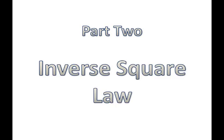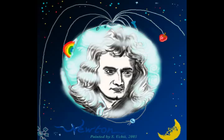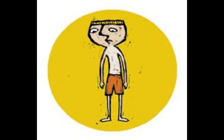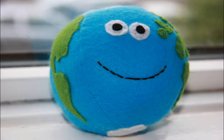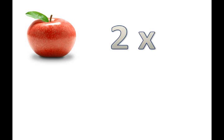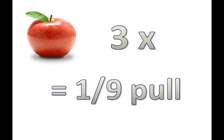Next, we have the inverse square law. There's a little bit of contention because some guy named Hooke said that he thought it up, but Newton said he thought it up first but just didn't show it to anybody — so you can make up your own mind. The inverse square law states that Earth's gravitational pull weakens the farther away an object moves from Earth, and it weakens with the square of the distance. So an apple two times as far away from Earth would feel one-fourth the pull, and an apple three times away would feel one-ninth the pull.